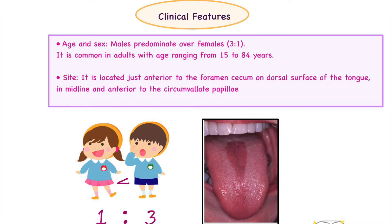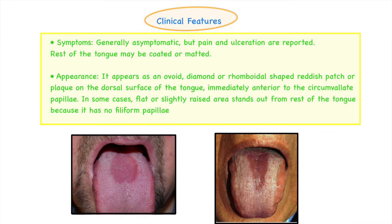Clinically, this lesion can be easily differentiated from others due to its characteristic appearance. The majority of subjects are asymptomatic, but in some cases there may be pain and ulceration. The rest of the tongue may appear coated or matted due to the presence of Candida albicans. The lesion appears as an ovoid, diamond, or rhomboid-shaped reddish patch or plaque-like area on the dorsum of the tongue, immediately anterior to the circumvallate papillae. It may appear flat or slightly raised, elevated from the tongue surface due to the absence of filiform papillae in that area.